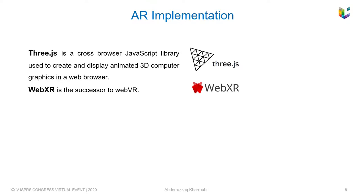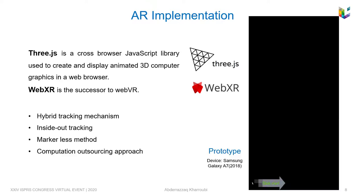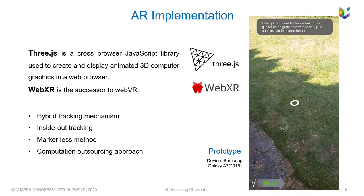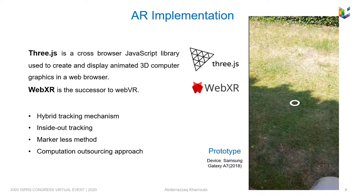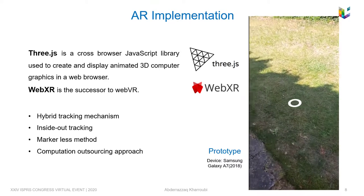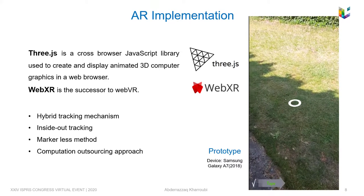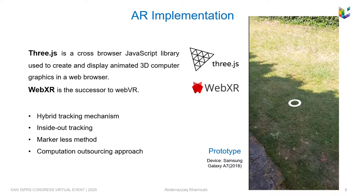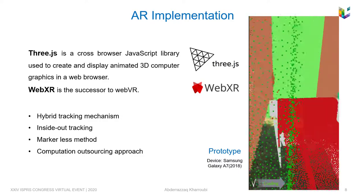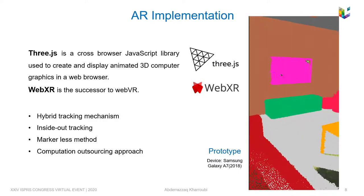This process begins with opening an immersive session in augmented reality via an AR button, which launches the camera to detect the surrounding environment. Then, a hit-test script is launched to allow making a ray cast with the detected planar surface to anchor the 3D point cloud.